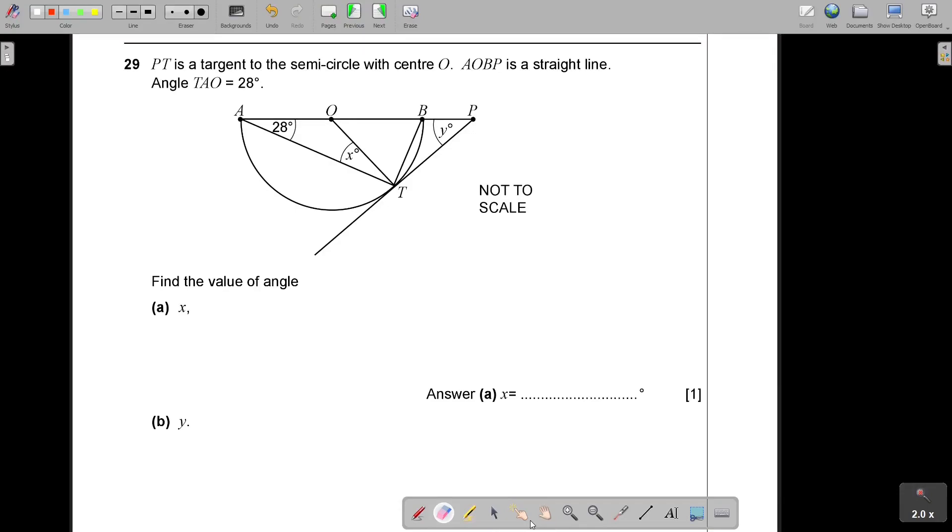Let's start with question number 29. PT is a tangent to the semicircle. Very important. With center O. AOBP is a straight line. Angle TAO is 28 degrees. Now, before I start with, let's just reflect angles in a circle. Now, if they say that this is a diameter, it's a semicircle, then I know that the angle in a semicircle will be 90 degrees. I'm just going to fill in this. If they say that this is a tangent, I know that the angle between a tangent and a radius, that will be equal to 90 degrees.